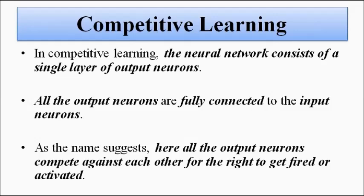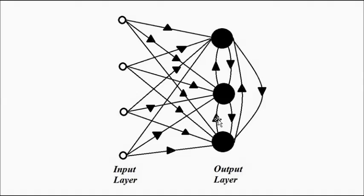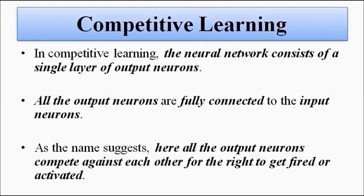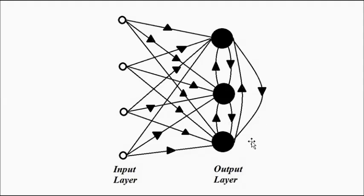In competitive learning, we have a neural network consisting of a single layer of output neurons. The neurons filled with black — the large size circles — are the output layer, and there is an input layer of neurons. They are connected with every other neuron possible through synaptic connections, each having certain weights associated with it marked by the arrowheads. All the output neurons are also connected to each other through synaptic connections.